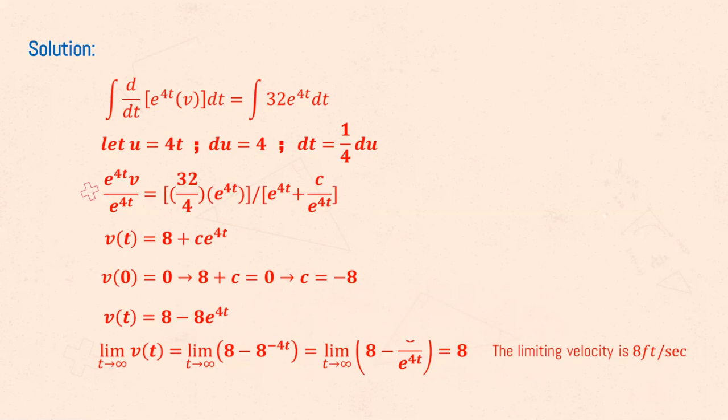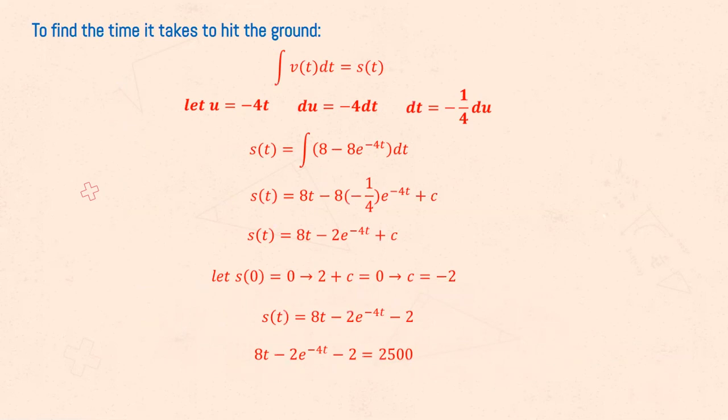To find the time it takes to hit the ground, we need to find the position function. The velocity function is the derivative of the position function, so we can integrate the velocity function to get the position function. By doing that, we get s(t) is equal to 8t minus 2e raised to negative 4t plus c.